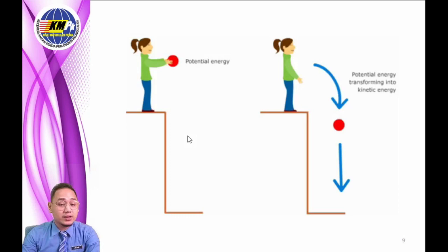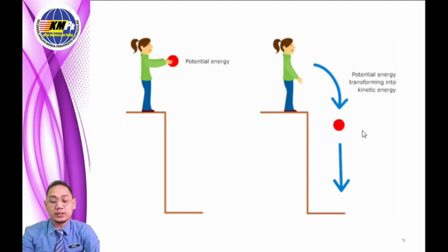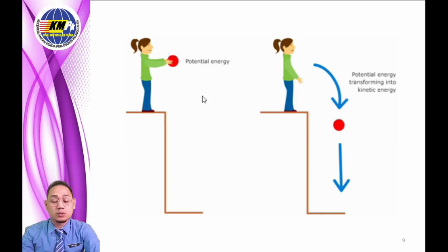Let's look at the figure shown. When a girl is holding up a ball, the ball has gravitational potential energy. Since the ball is initially not moving, it does not have kinetic energy. But right after the ball is released from the high ground, the potential energy is converted to kinetic energy, giving downward motion to the ball. From this example, we can see that kinetic energy was not created, nor was the potential energy destroyed — instead, the energy was converted into another form. This relationship between the two energies is what we call mechanical energy.